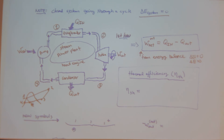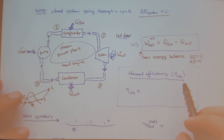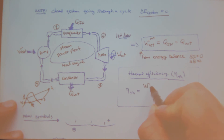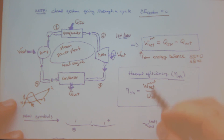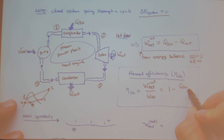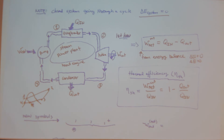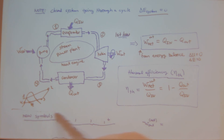The thermal efficiency of this process is the net work out divided by Q_in, which equals one minus Q_out over Q_in. We'll pick up from here next week.